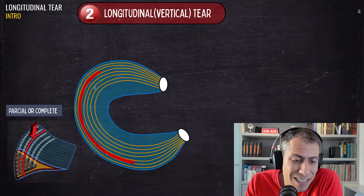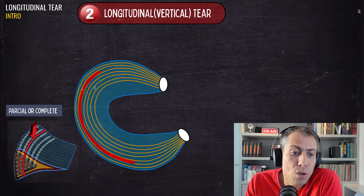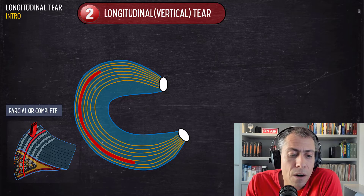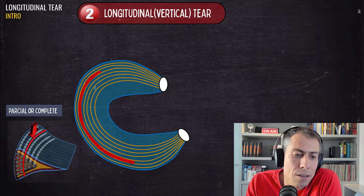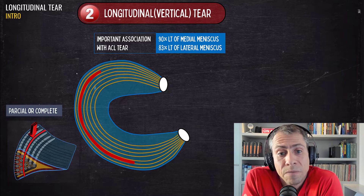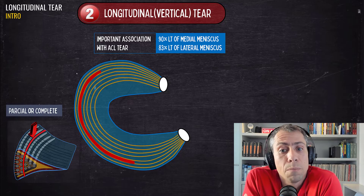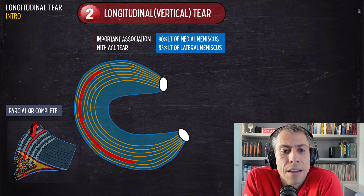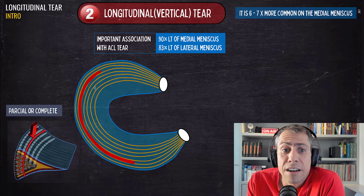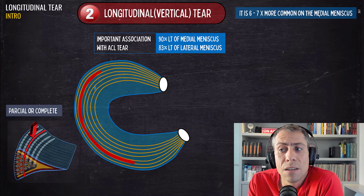This tear is generally located at the periphery or in the middle third of the meniscus, talking about the short axis. There is an important association with ACL tears: 90% of longitudinal vertical tears of the medial meniscus are associated with ACL tears, and 83% of those of the lateral meniscus are associated with ACL tears. Generally speaking, this tear is six to seven times more common in the medial meniscus.